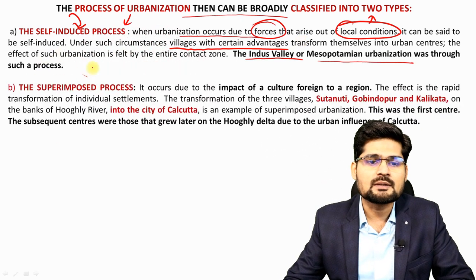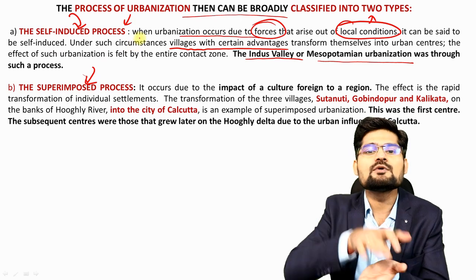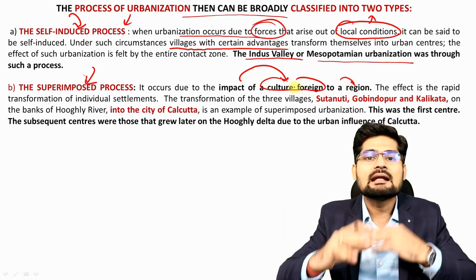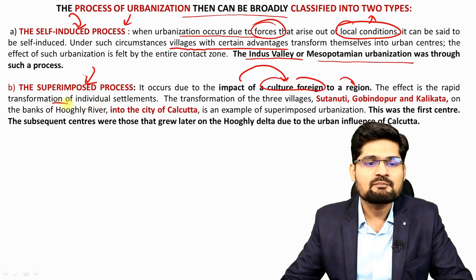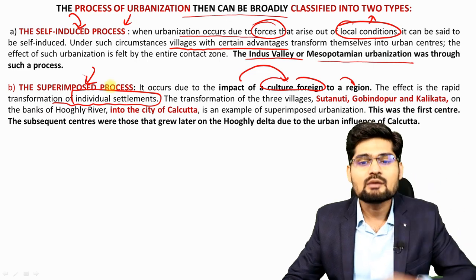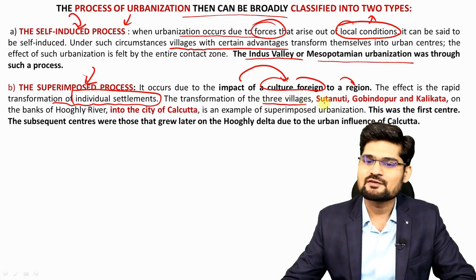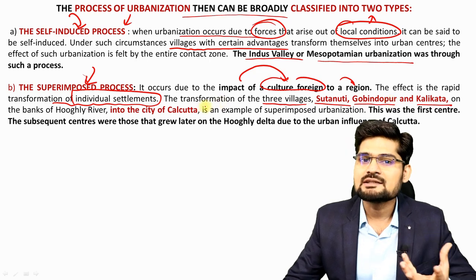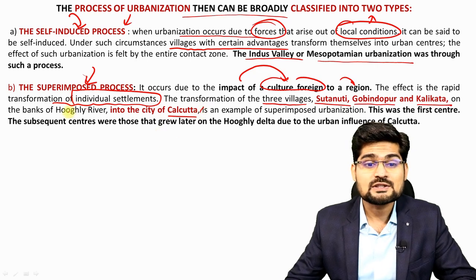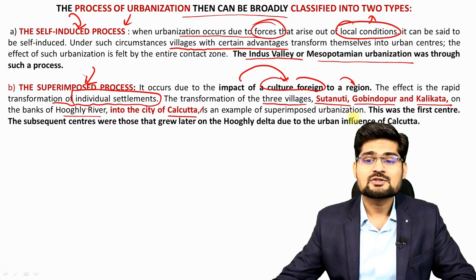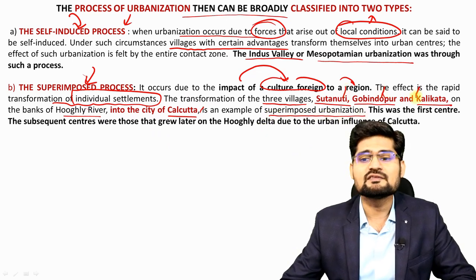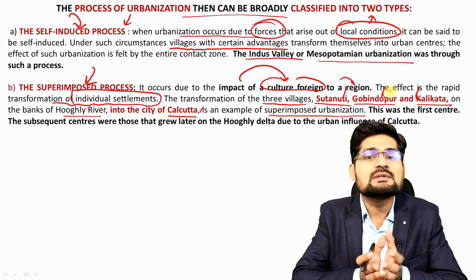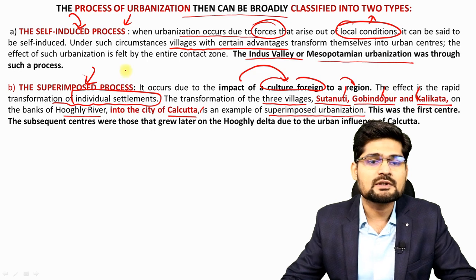The second process is the superimposed process — where urbanization is the impact of a culture foreign to a region. Something came from outside and led to the urbanization process, causing rapid transformation of individual settlements by external factors. A very interesting example is the three villages of Sutanuti, Gobindapur and Kalikata, which became the urban center called Calcutta or Kolkata. This transformation happened during the British colonial era — these earlier villages were combined and created as an urban center on the banks of the Hooghly River.